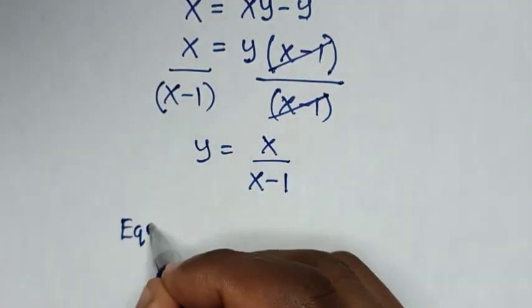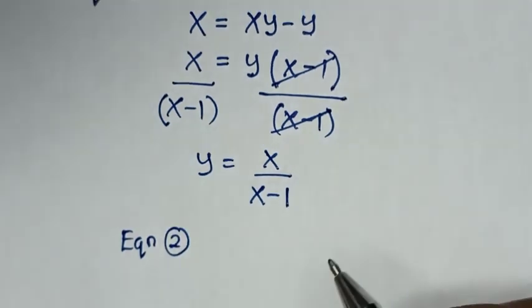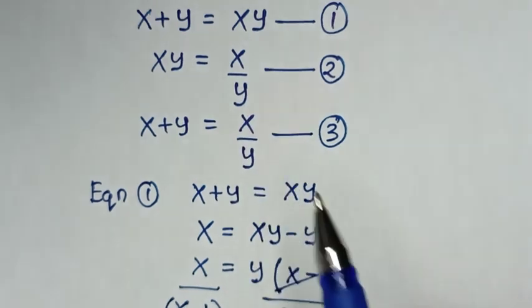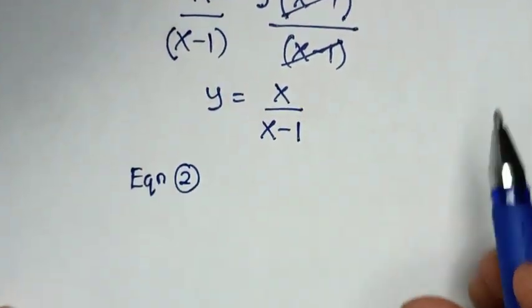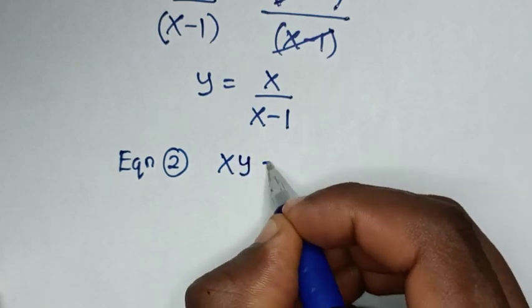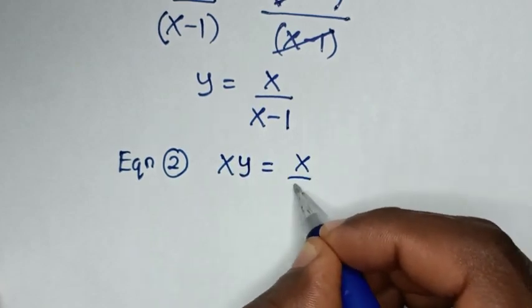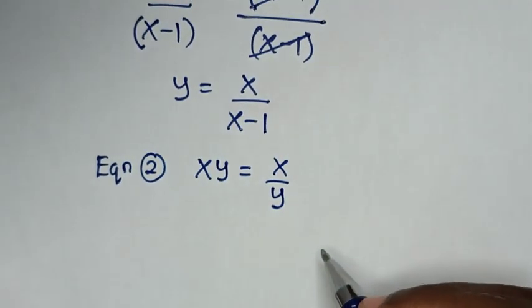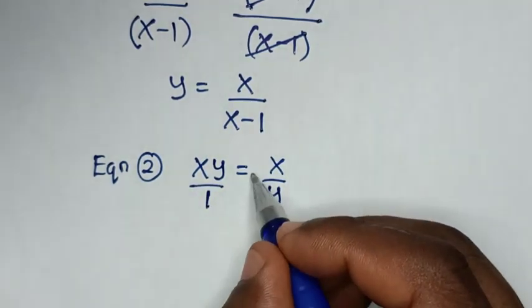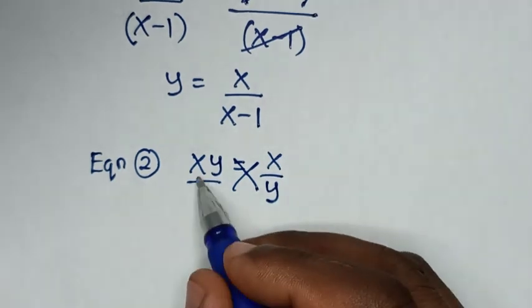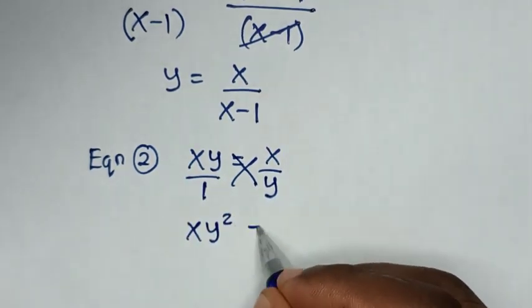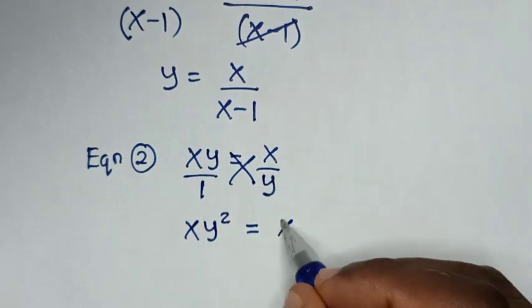From equation 2, which is xy equal to x over y — this is the same as xy over 1 — we cross multiply, giving xy squared is equal to x.